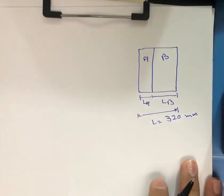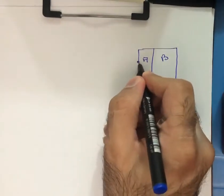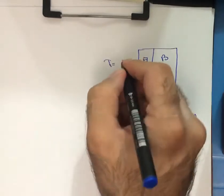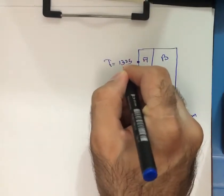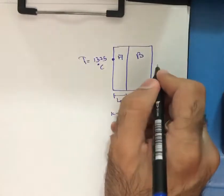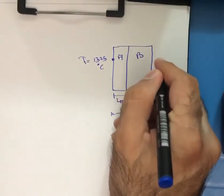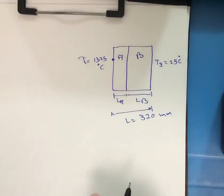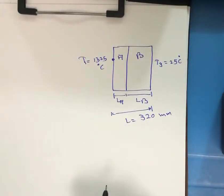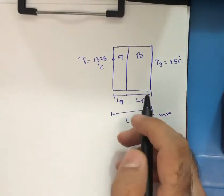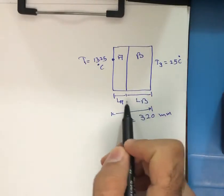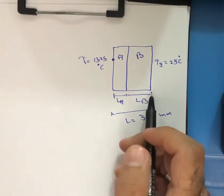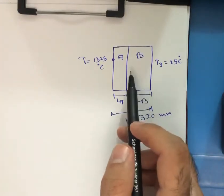The temperature on one side is T1, and the temperature on the other side is T3, which is equal to 25 degrees Celsius. This reactor wall of 320 millimeters total thickness is made up of an inner layer.